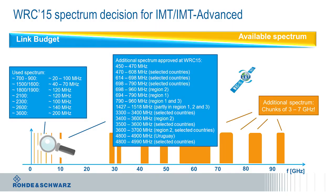Still, the bandwidth available below 6 GHz is limited simply because of the absolute frequency used. It is obvious that bigger chunks are only available at higher frequencies. It should also be noted that the higher the frequency, the lower the link budget, as we all know. So let's come back to the potential spectrum above 6 GHz and what WRC had identified in this respect.